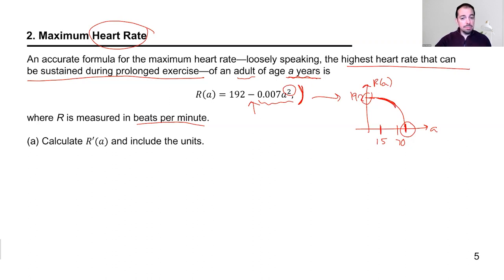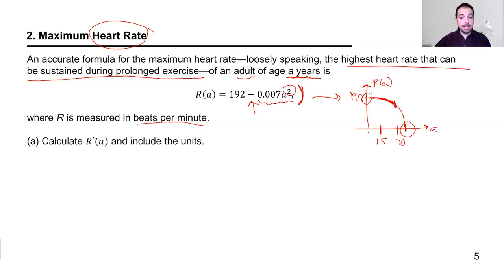The key point is that because it's a quadratic function that opens downward, it predicts your maximum heart rate decreases with age — going down as you get older. This makes sense: as you age, your heart is less able to pump the blood needed during exercise.